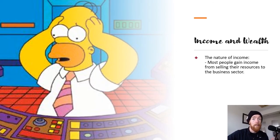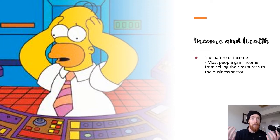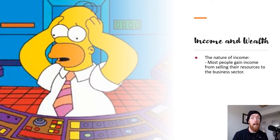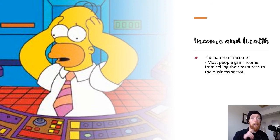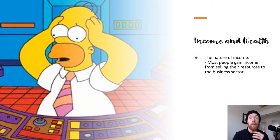We're going to be talking about income and wealth. So what is income? Well, most people gain an income from selling their resources to the business sector. For example, I'm technically selling my resources as a teacher — my knowledge of economics — to the government and providing it to you, and they give me an income for that. Other people, say if you work at KFC, you sell your labor to cook some chicken and they give you an income. Other ways people can gain income include things like rent from owning property, dividends from shares, or interest from savings. The most common method, though, is through selling your labor resources.